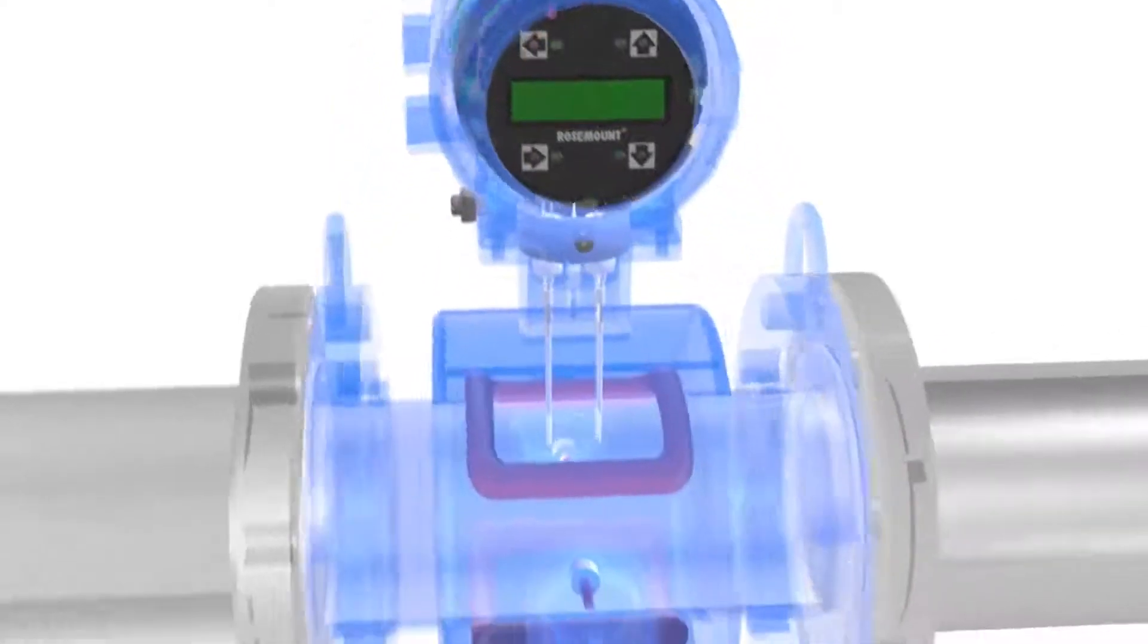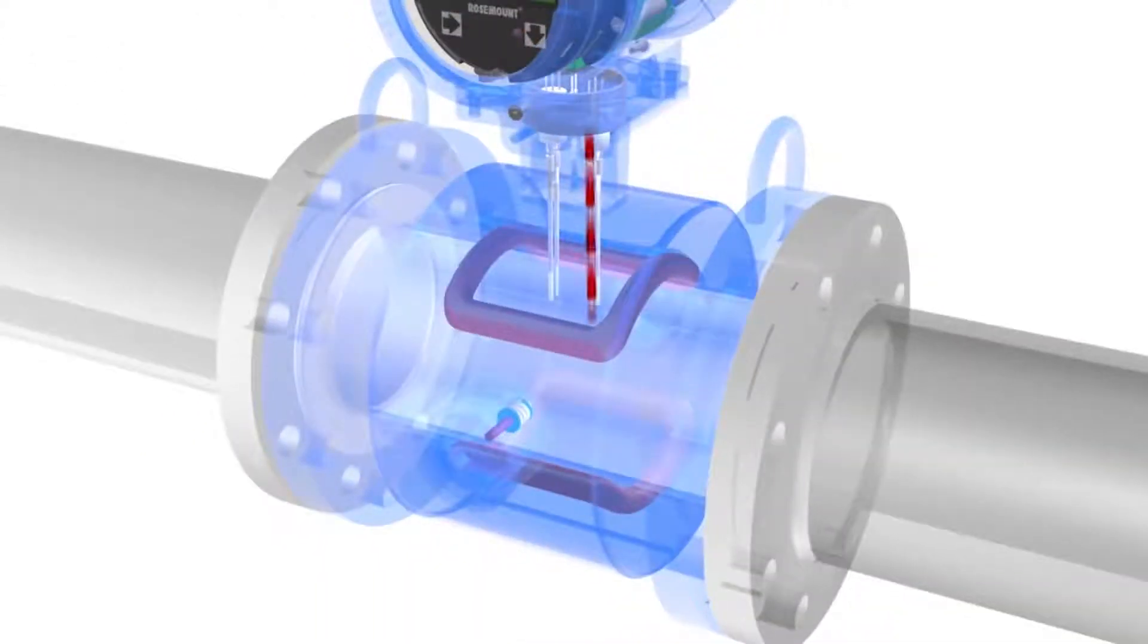To make the flow measurement, the magmeter utilizes a set of coils and a pair of electrodes. The magmeter's coils are driven by the transmitter with an applied current. Once powered, a magnetic field is formed between both coils.